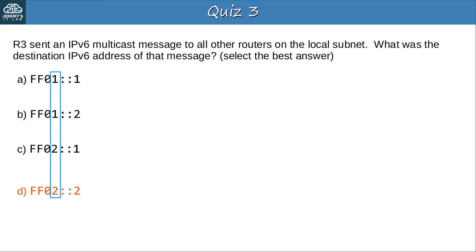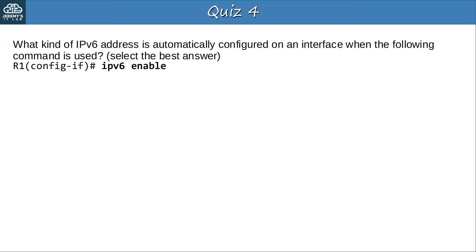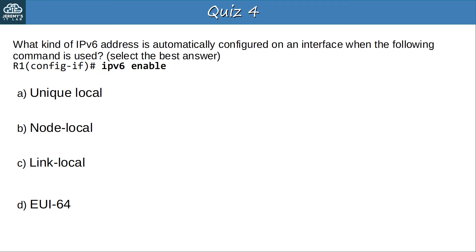Question 4: What kind of IPv6 address is automatically configured on an interface when the command IPv6 enable is used? The answer is C, link-local. IPv6 enable enables IPv6 on the interface and causes a link-local address to be automatically configured. IPv6-enabled interfaces must have a link-local address in addition to whatever other IPv6 addresses you might configure on them. In creating the link-local address the router does use the EUI-64 process, but EUI-64 is not the name of the address type, so D is not correct.